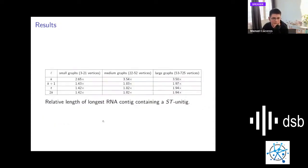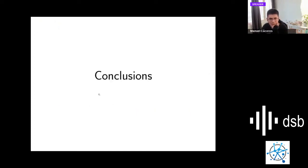We can see that it is up to 80% in small graphs. It's always better than unitigs. In fact, this comparison between unitigs and contigs is shown here. In general, we are 1.4 to almost 2 times longer than st-unitigs.